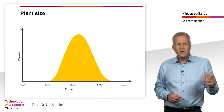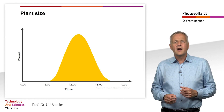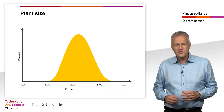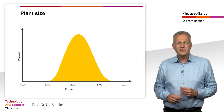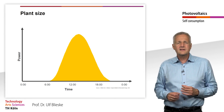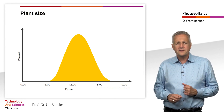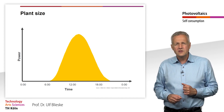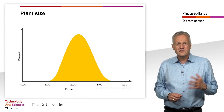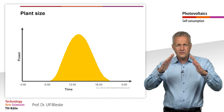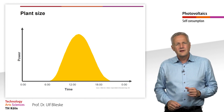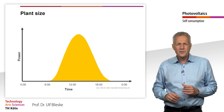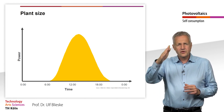For PV system owners, the question is how to maximize self-consumption as much as possible. Let's take a closer look at this using the example of a single-family house in Germany. A PV system with an output of 5 kW peak is installed on the roof of the house. At least on cloudless days, the generating curve of a PV system shows a bell-shaped curve.